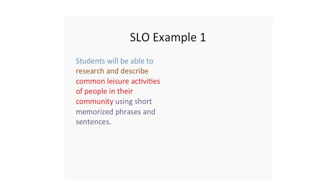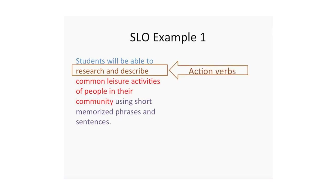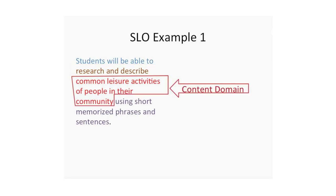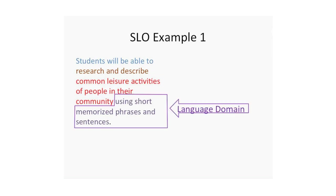You can see there are four things but three components: 'students will be able to,' then action verbs — research and describe — here is the content domain, and here is the language domain.